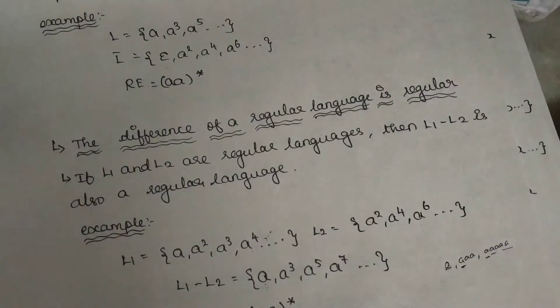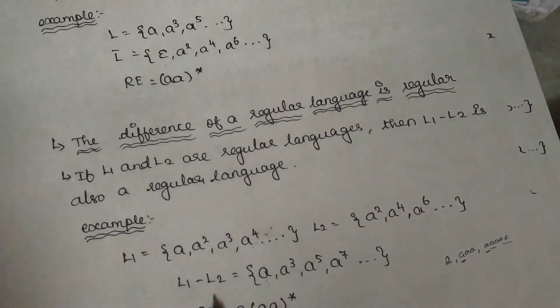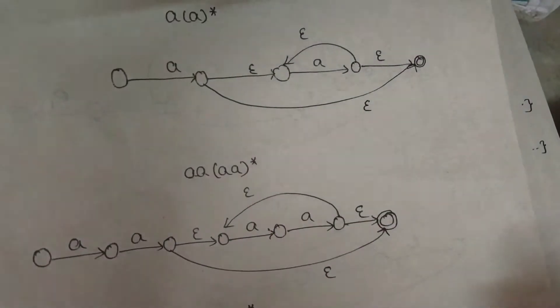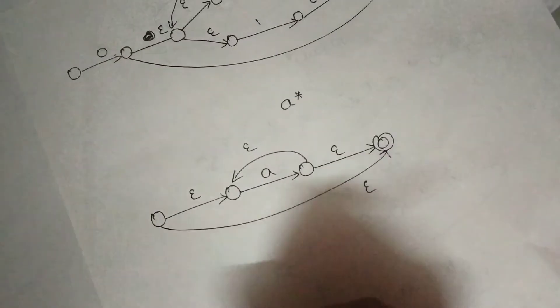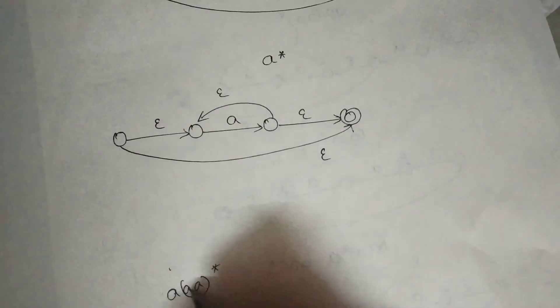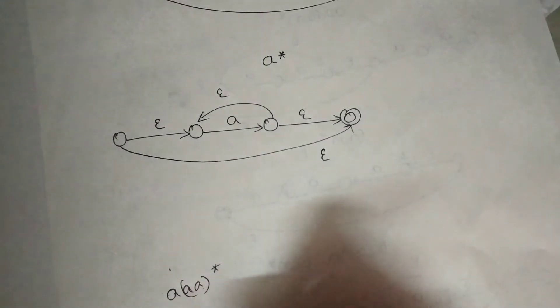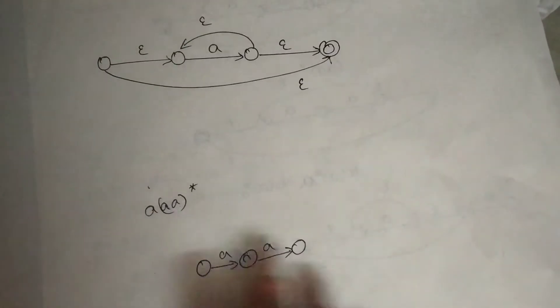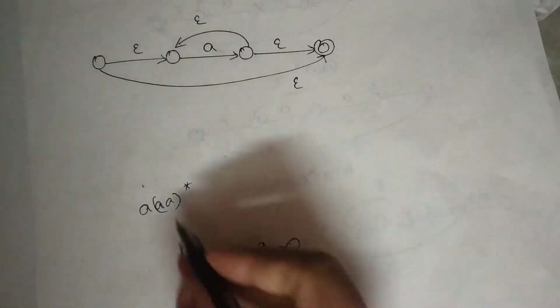This is a finite automata. The regular language — here you see A, double A star. Here you see A, double A star. The first bracket will be in the first bracket. 2A is in a concatenation, that's why I add it. 2A is in a concatenation, that's why I add it. Closure operations.